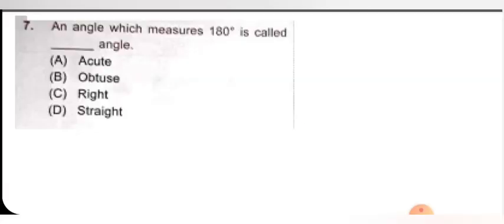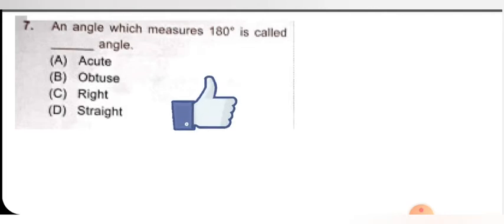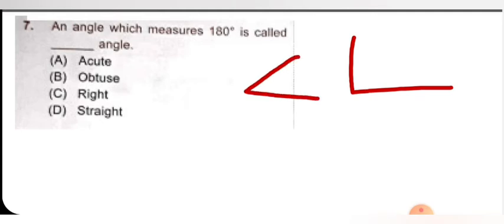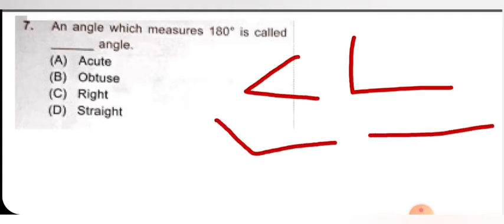Next question: an angle which measures 180 degree is called dash angle — options are acute, obtuse, right, and straight. I have just told you that straight angle is 180 degree. Right angle means 90 degree, less than 90 is acute, greater than 90 is obtuse, and straight line means 180 degree. So option D is correct.